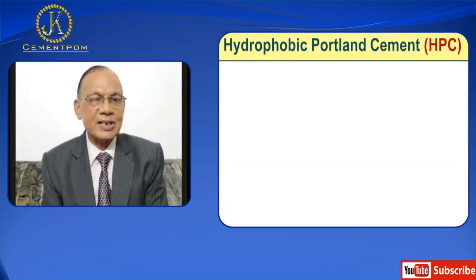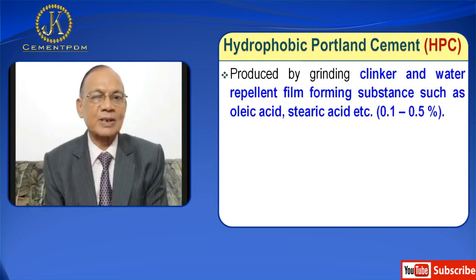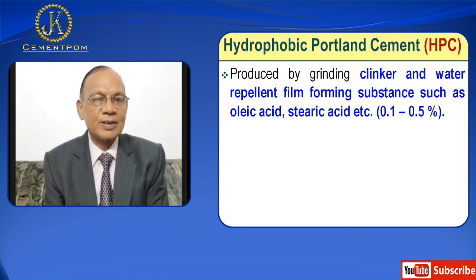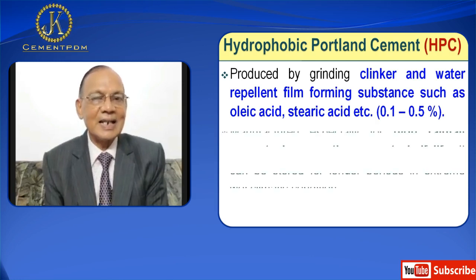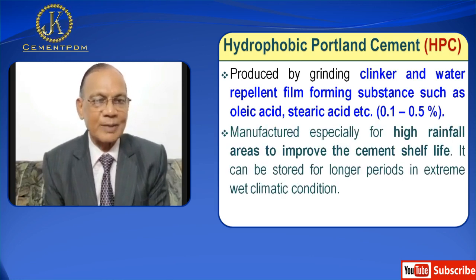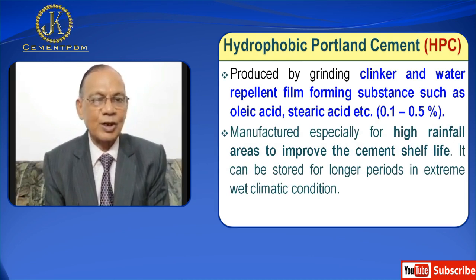Next is Hydrophobic Portland Cement, HPC. It is produced by grinding clinker with a water-repellent film-forming substance such as oleic acid, stearic acid, etc. The amount added is 0.1 to 0.5%. It is manufactured especially for high rainfall areas to improve the cement shelf life, and can be stored for longer periods in extremely wet climatic conditions.